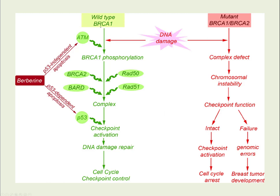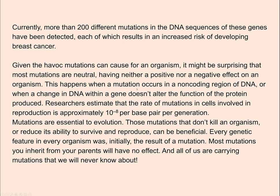Wild type means the normal type that you normally see. In normal cells, BRCA function leads to appropriate apoptosis and cell death when needed. In the mutant, if there's a defect, the checks and balances don't occur properly and you get genomic errors — some of which can lead to breast cancer. There are about 200 different mutations in the DNA sequences of these genes that have been detected, each resulting in increased risk of developing breast cancer.